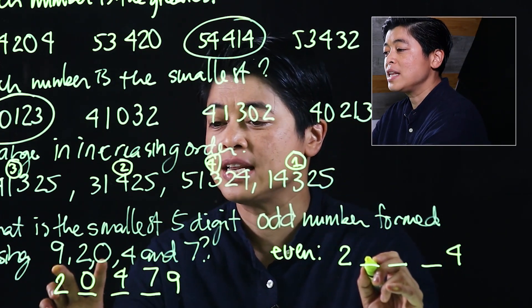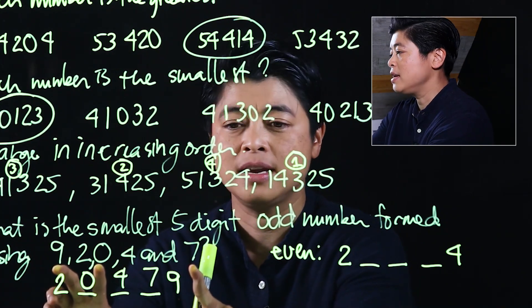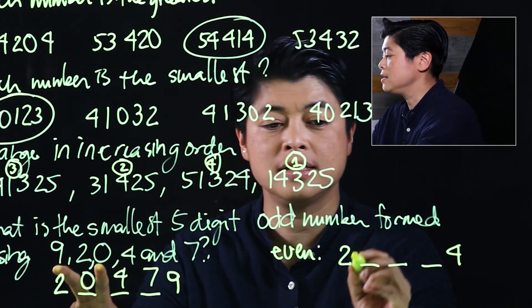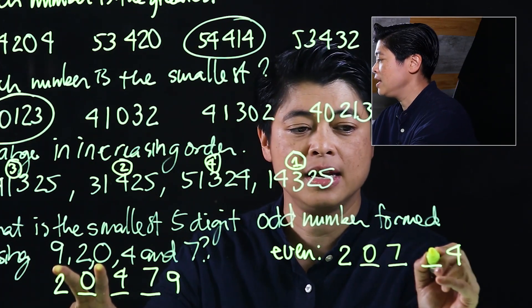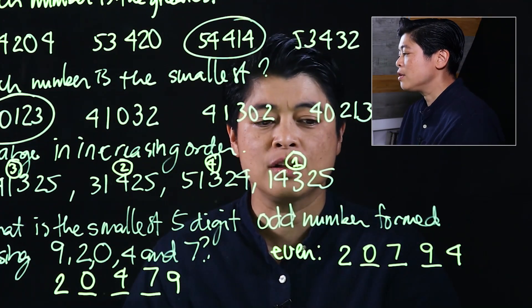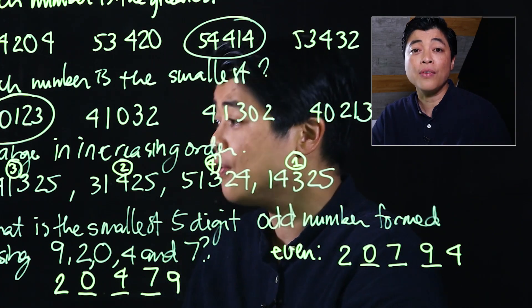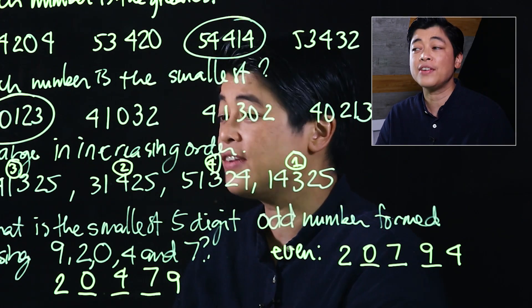That means arranging 9, 0, and 7 for the smallest would be 0, 7, and 9, making 20,794 the smallest five-digit even number.